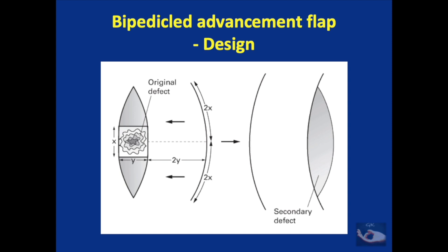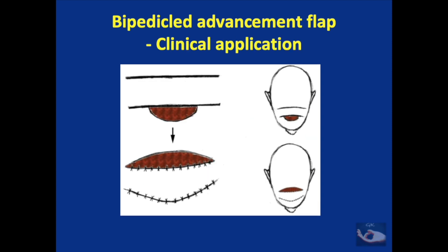After the bipedicled flap is advanced, there may be a need for a skin grafting of the secondary defect. The bipedicled advancement flap can typically be planned on the scalp or on defects on the shin of the tibia.